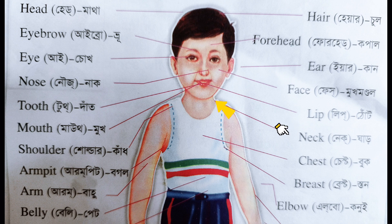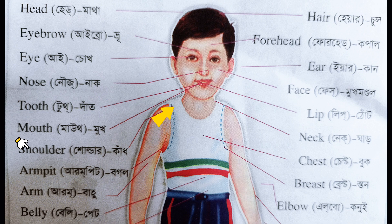Neck — the Bangla meaning of Neck is 'Ghahar'. Shoulder — the Bangla meaning of Shoulder is 'Kad'. Chest — the Bangla meaning of Chest is 'Buk'.